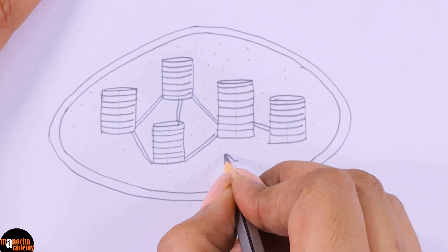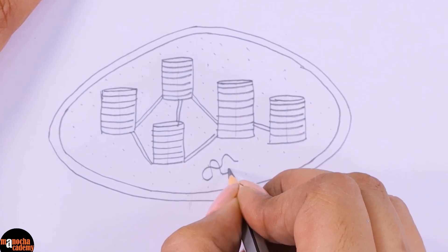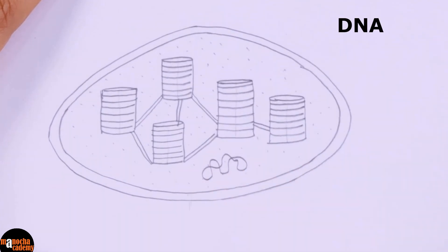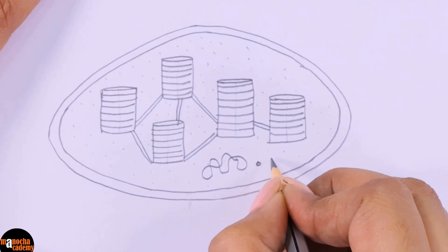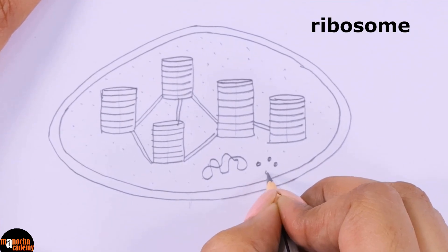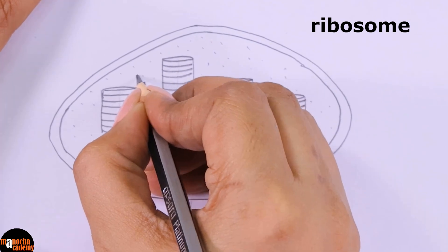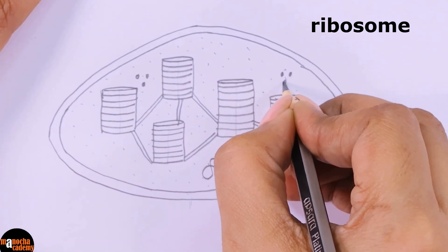What else is present inside the chloroplast? Chloroplast like mitochondria has its own DNA. So we will draw DNA here. And of course it has its ribosomes. So you can draw ribosomes in certain places.